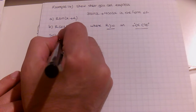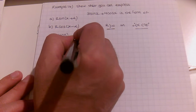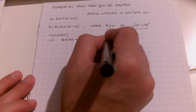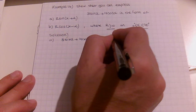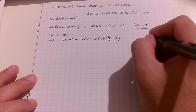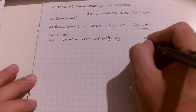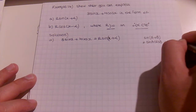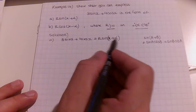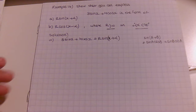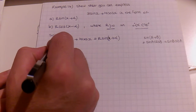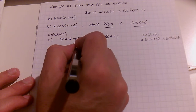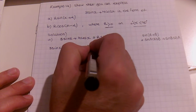Let's convert 3·sin(x) plus 4·cos(x) into the form R·sin(x + α). To do that, 3·sin(x) plus 4·cos(x) must be identical to R·sin(x + α). We know from the sine addition formula that sin(A + B) equals sin(A)·cos(B) plus sin(B)·cos(A).